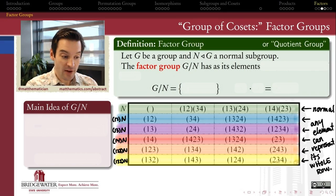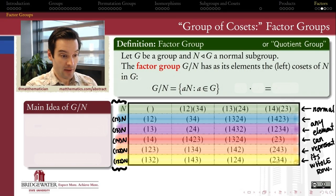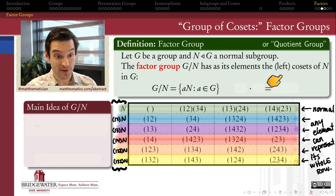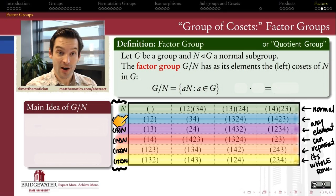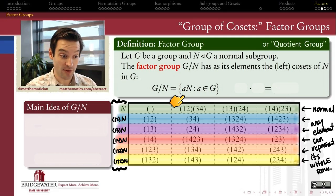So what are the elements of this factor group then? The elements are therefore the cosets, and it doesn't matter if we say left cosets or right cosets, because remember, when N is a normal subgroup, all the left cosets are equal to the corresponding right cosets, so it doesn't matter which one we choose, we've got to choose one just for the sake of notation, so I'm going to choose left cosets.